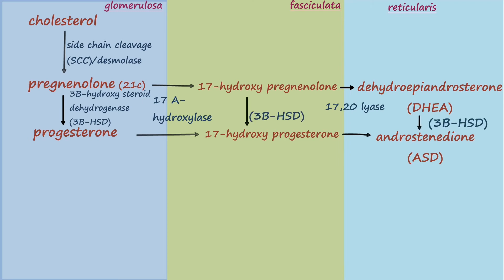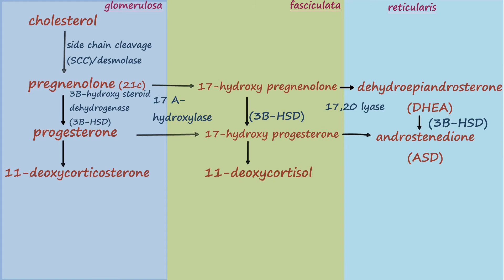At the right end, which signifies the zona reticularis layer, we have our two androgens: DHEA and androstenedione. Moving vertically, progesterone will be converted into 11-deoxycorticosterone, and 17-hydroxy-progesterone will be converted into 11-deoxycortisol. Both of these reactions are catalyzed by 21-alpha-hydroxylase.